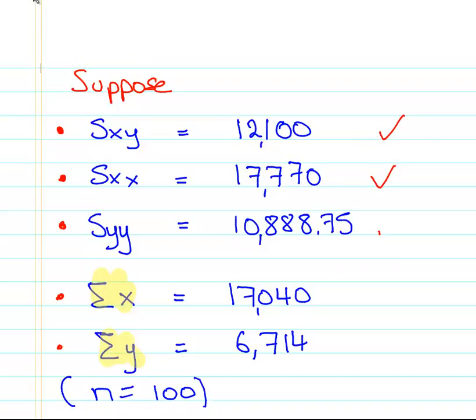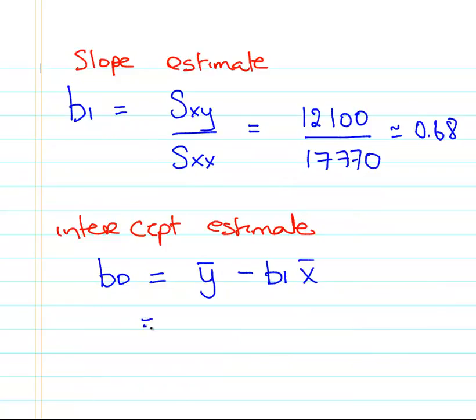It's essentially just a little hazard. So X bar, in this case, is going to be 170.40, and Y bar is 67.14. It's important, actually. I'm not referencing it here, but it's also good to take into account what these units are, what the variables are, what Y is and what X is.